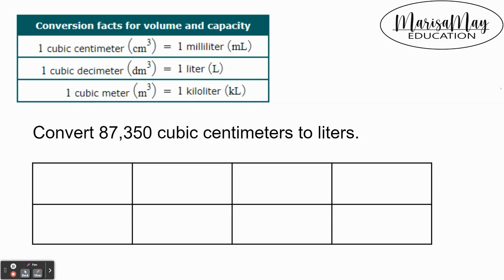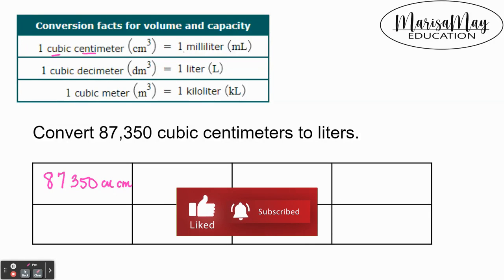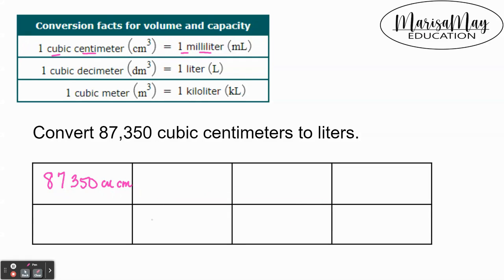In this video we're going to convert 87,350 cubic centimeters to liters. I'm using a box to organize my information. I'm going to start with the cubic centimeters here, and notice that one cubic centimeter is one milliliter, so I'm going to put the cubic centimeter on the bottom.